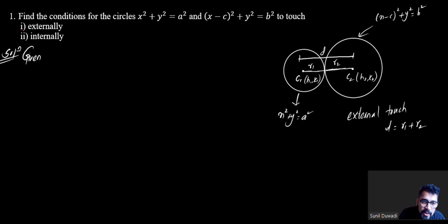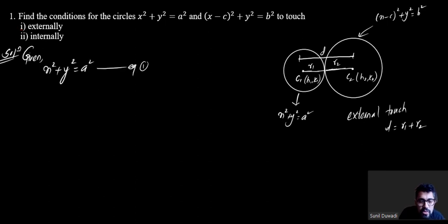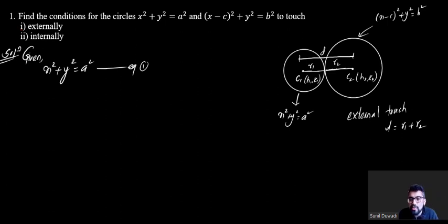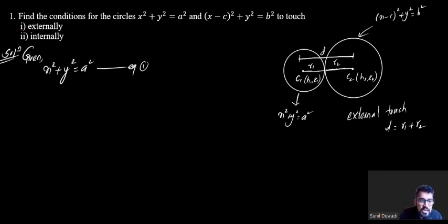The first equation is x squared plus y squared is equal to a squared. To find the center and radius, we compare this with the standard form x minus h, squared, plus y minus k, squared, equals r squared.